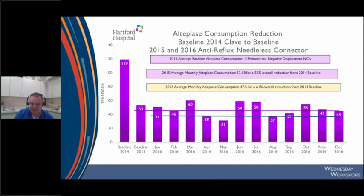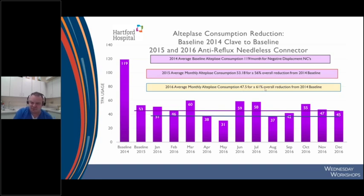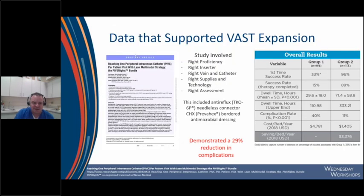This shows our savings. Our baseline was 119 milligrams a month. With the introduction of the anti-reflux needleless connector and taking over alteplase ordering, we sustained a nice reduction through 2015 and 2016, achieving a 61% overall reduction from our 2014 baseline.